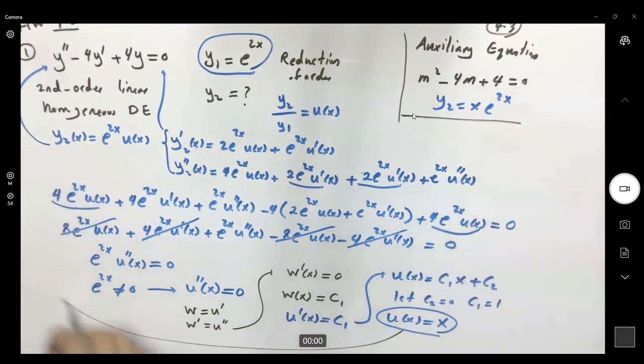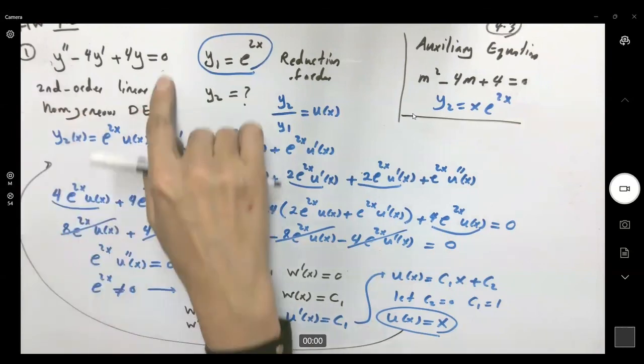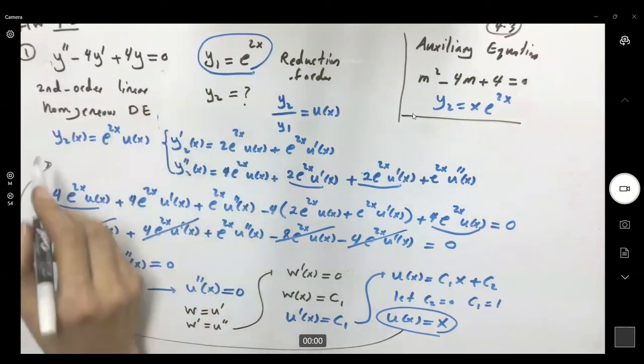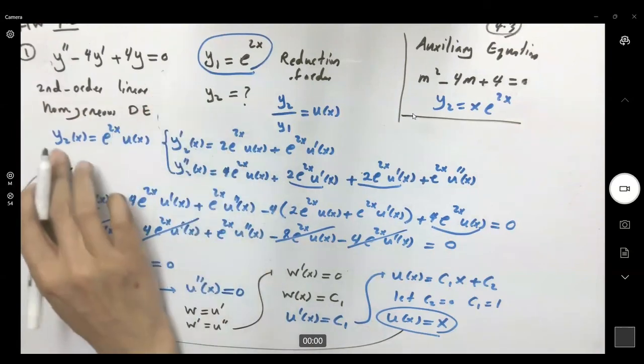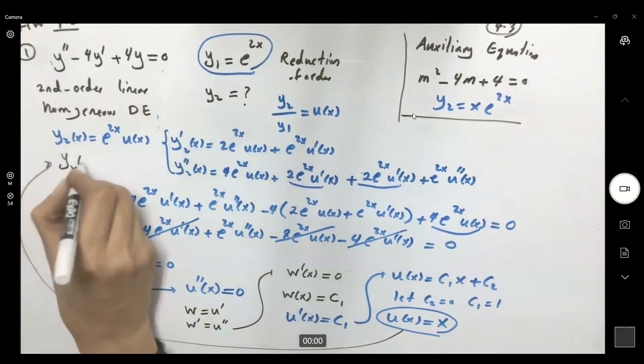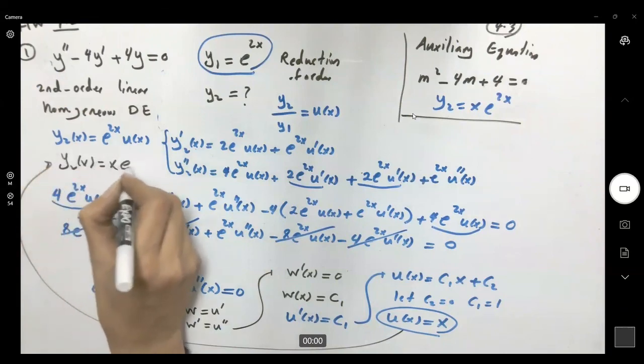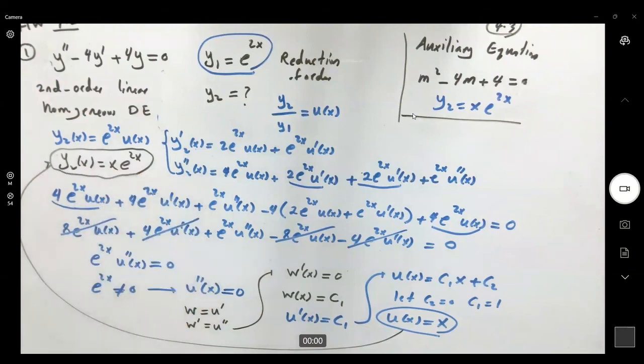So we'll come back here. y2 of x becomes x e to 2x. We found the second solution.